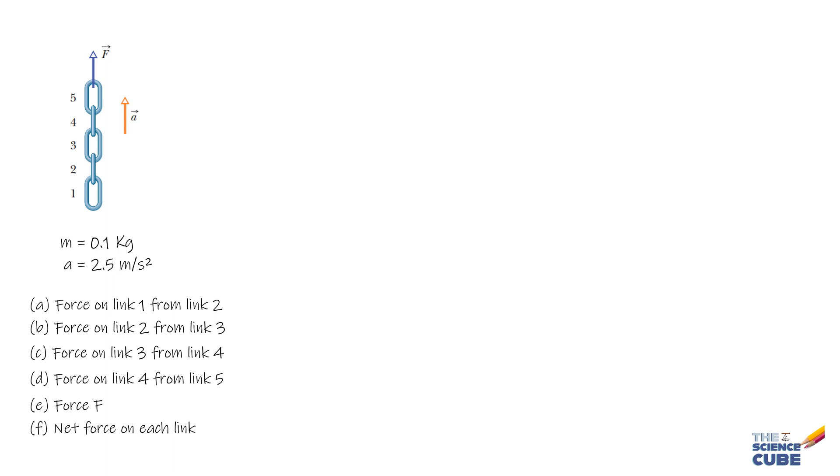The approach we will take is that we will need to see each link in isolation, make its free body diagram, and then write the equation F equals MA for each link.